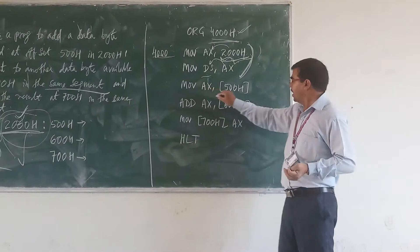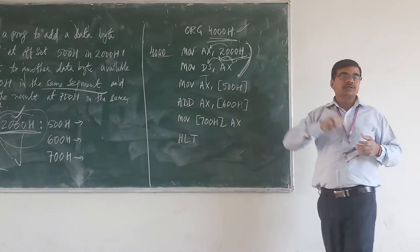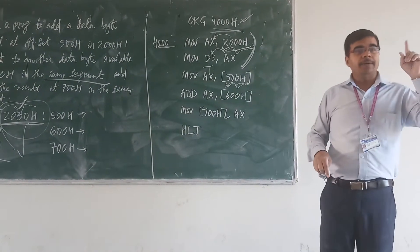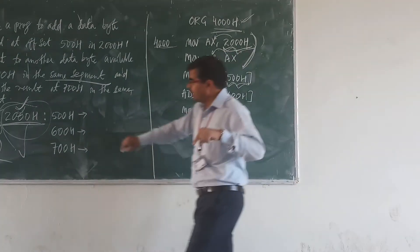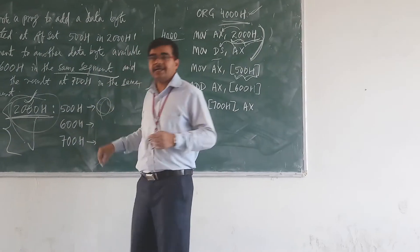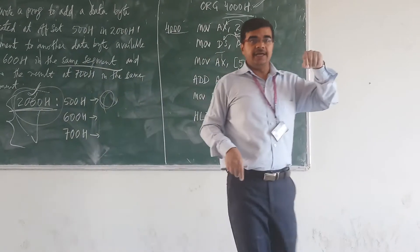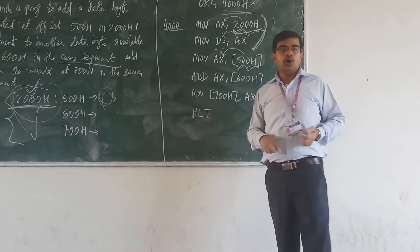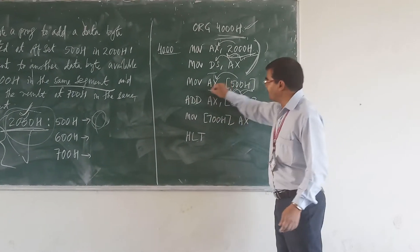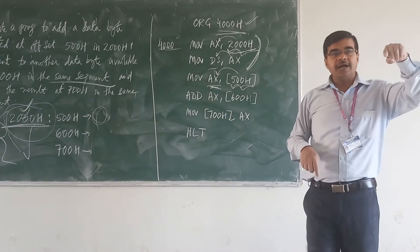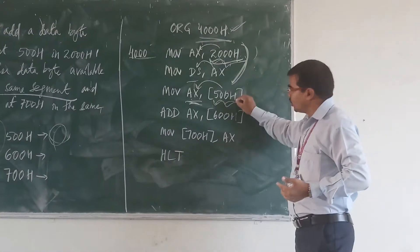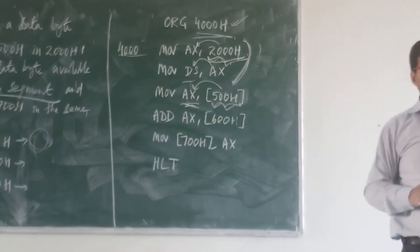Next, we write MOV AX, 500H. 500H is the memory location in the 2000H segment. Whatever data is stored at 500H, that data is copied into the AX register. So the first data is now stored in AX.